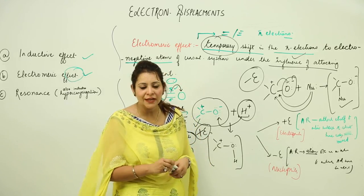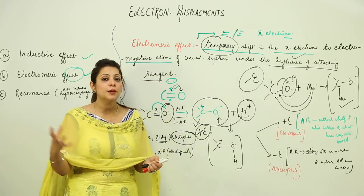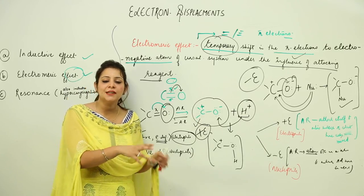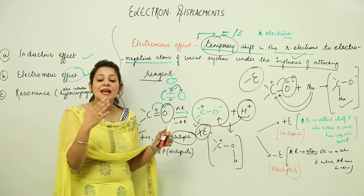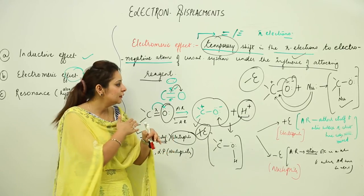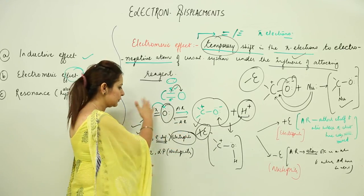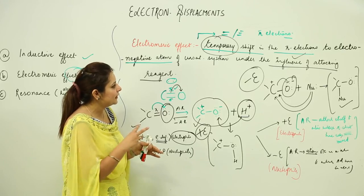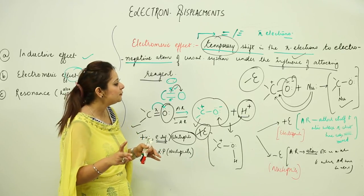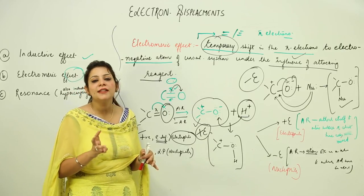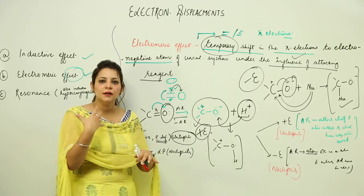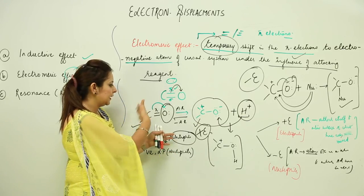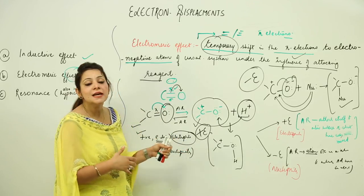To summarize: the electromeric effect occurs only when an attacking reagent approaches the molecule. It is a temporary effect — as long as the attacking reagent is present, the electron displacement takes place, but as soon as it is removed, the electrons return to their original distribution and the original molecule is restored. It requires an unsaturated system with pi electrons, and the displacement persists only in the presence of the attacking reagent.